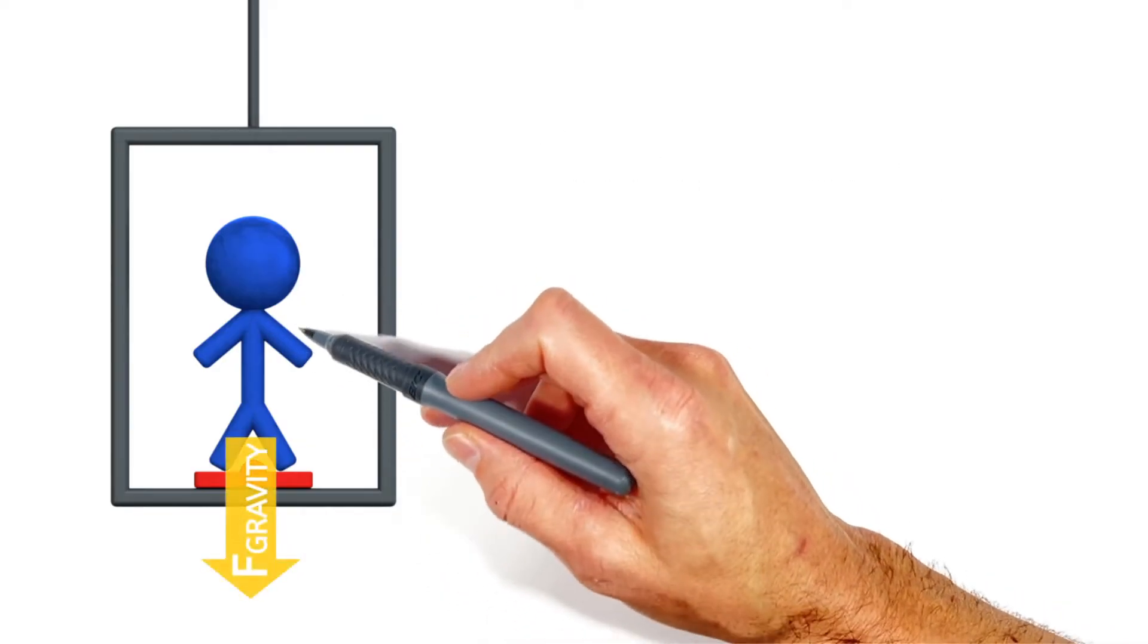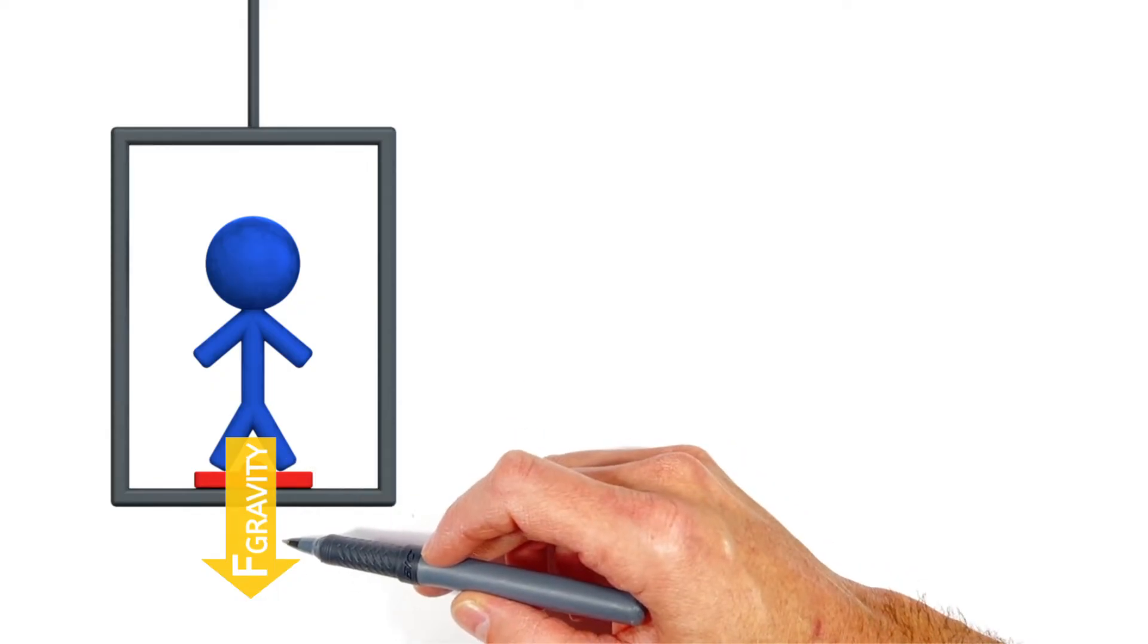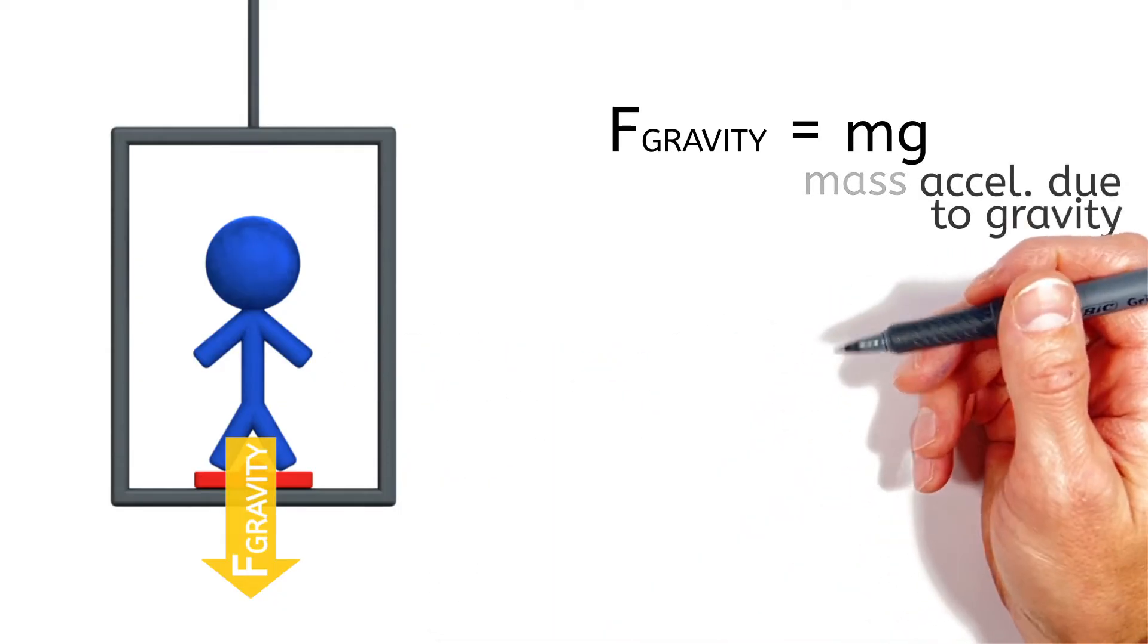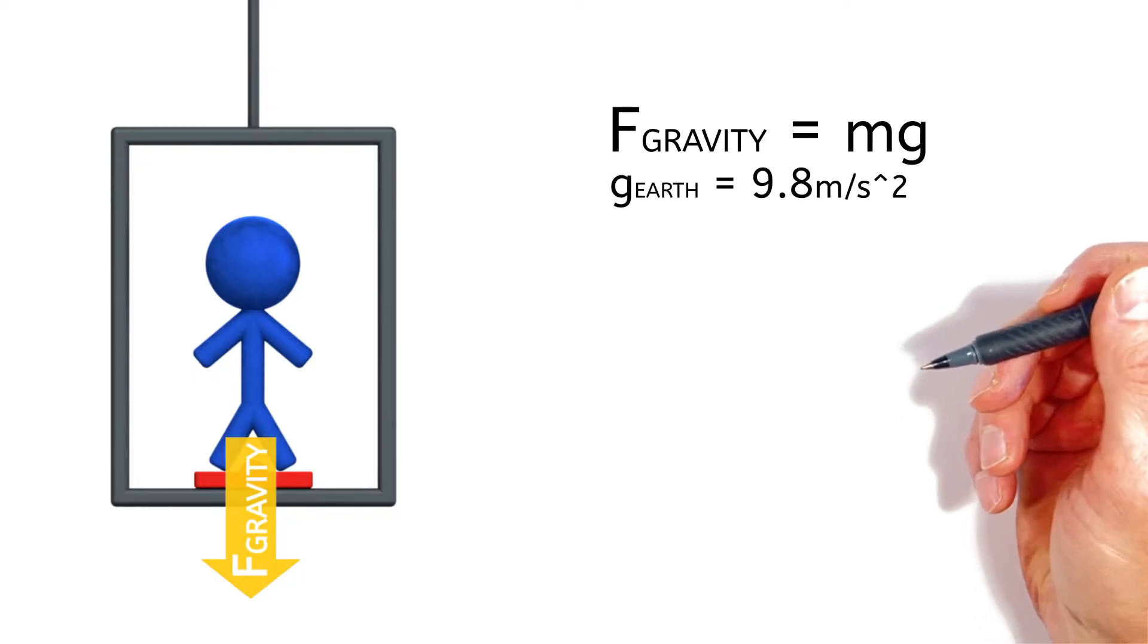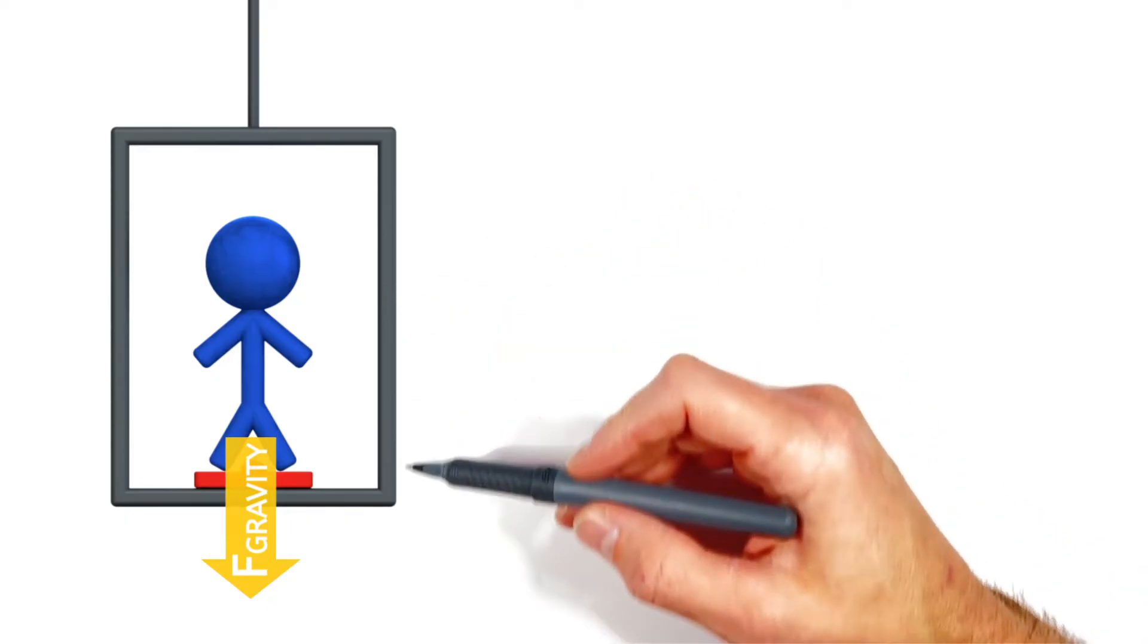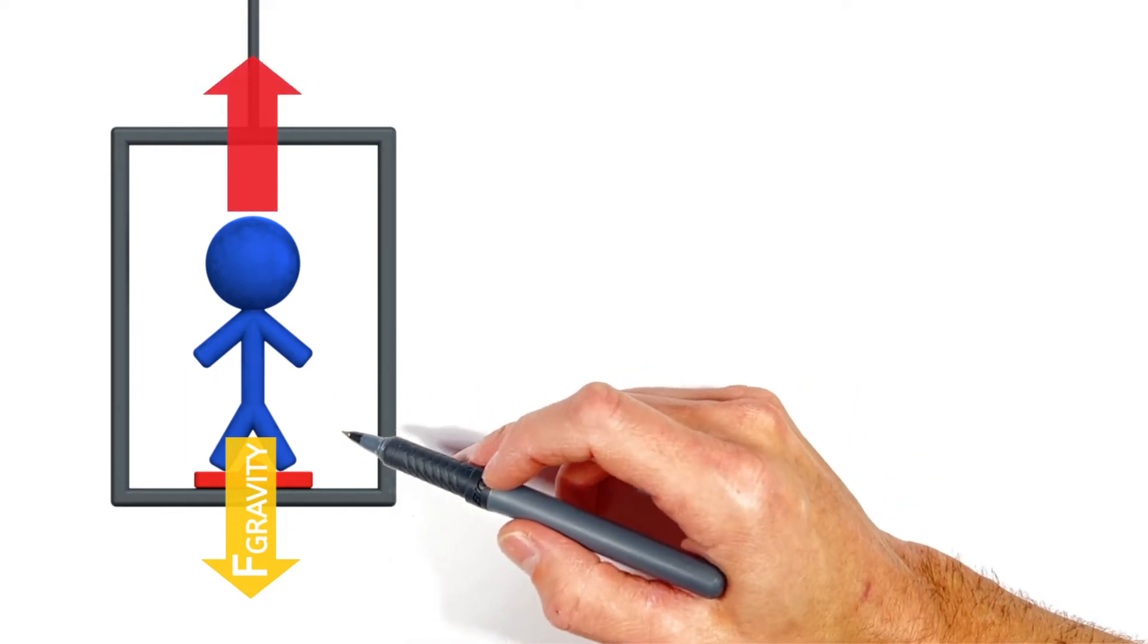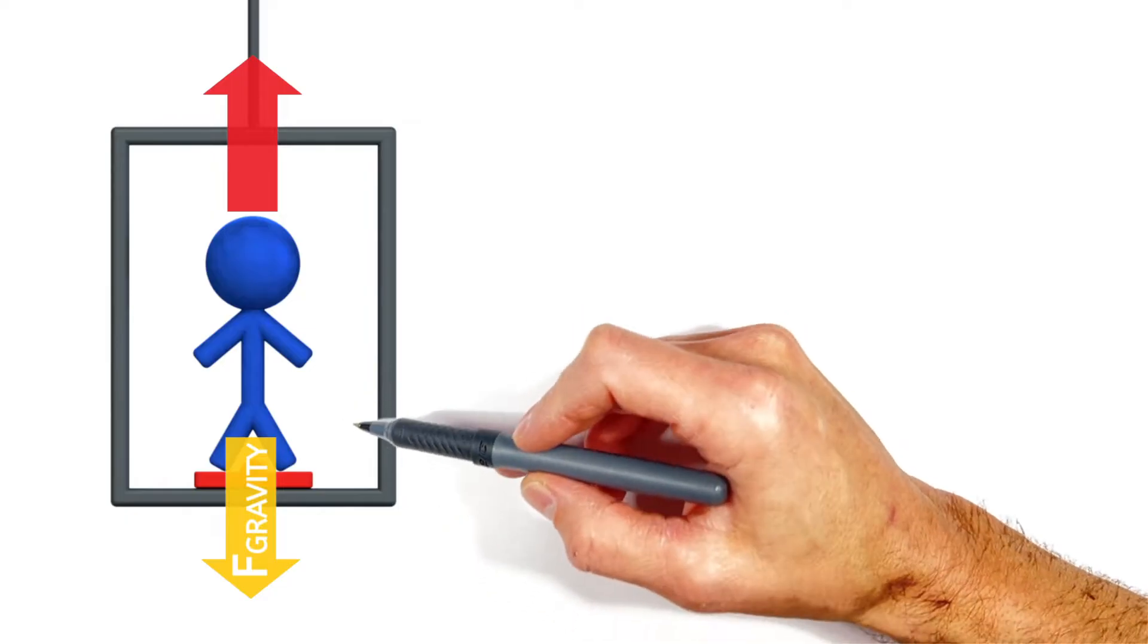So looking at this person, first there's the force by gravity or the weight acting downward on this person. And the way we calculate the force by gravity is by multiplying the person's mass by g, the acceleration due to gravity, which on earth is 9.8 meters per second squared. Now in the absence of other forces, this person would just free fall downward like an apple from a tree, meaning there has to be something holding up our person. And in this problem, that force is actually coming from the scale.